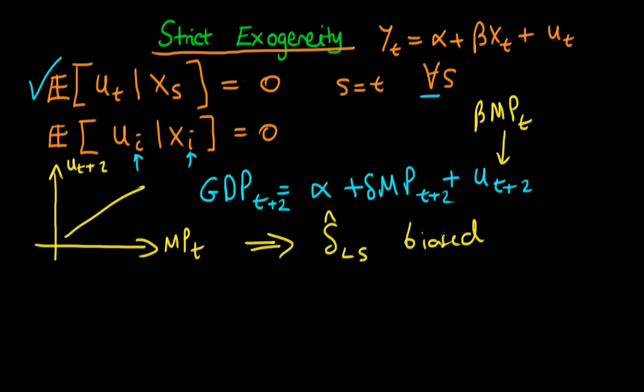Luckily there's an easy way to deal with this: include lagged effects of the independent variables. So GDP at time t equals alpha plus delta 1 times monetary policy at time t plus monetary policy at time t minus 2. By including this term explicitly in the regression, we remove the correlation between ut+2 and mt. Just by making our model dynamic rather than static, we remove this problem of strict exogeneity being violated.